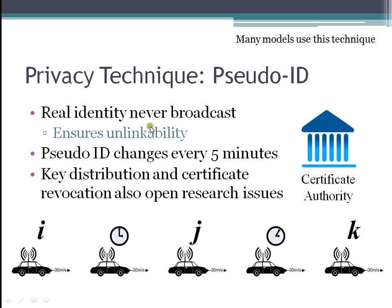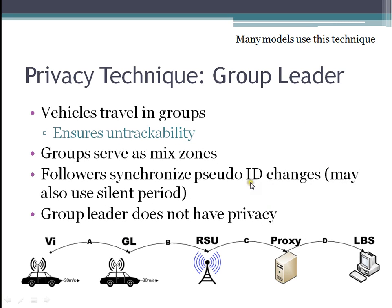The privacy technique of a pseudo-ID basically makes sure that the real identity is never broadcast. The pseudo-ID changes every five minutes — so a car has a certain identity, five minutes later it has a new identity, and so on. A certificate authority gives a whole series of identifiers to a single car. In many of the models, they use a group leader or group signature concept. Vehicles travel in groups, creating a mixed zone to ensure untrackability with K-anonymity. The problem is that all the traffic gets relayed through the group leader, and the group leader himself does not have privacy.